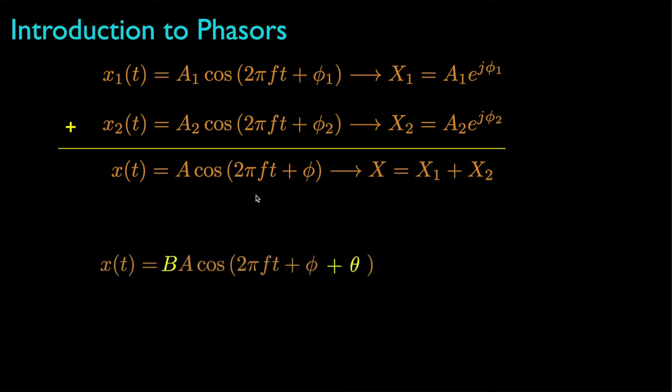Now, if we want to scale the amplitude and shift the phase of a sinusoid, we can use phasor notation for that. And we can do that with complex multiplication. That is, to scale a sinusoid by B and shift its phase by theta, we can multiply the phasor by the complex value B e to the j theta.